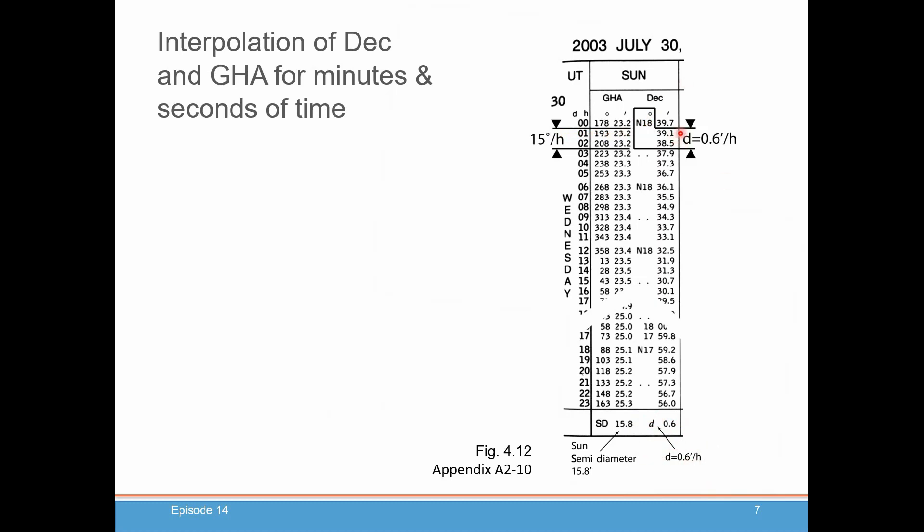The other thing you're going to want to look at is, are the declinations increasing or decreasing? Just strictly, are the numbers going up or down? If we look here, going from 0 100 hours to 0 200 hours, it looks like the declination is decreasing. That's going to be important as well.